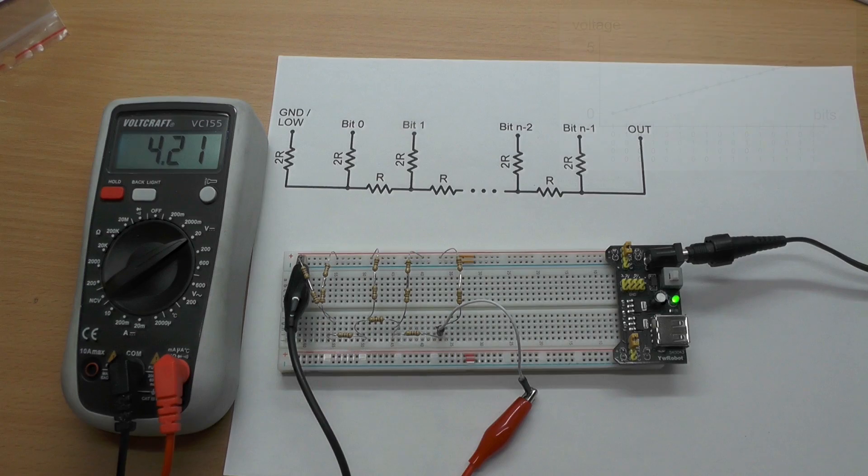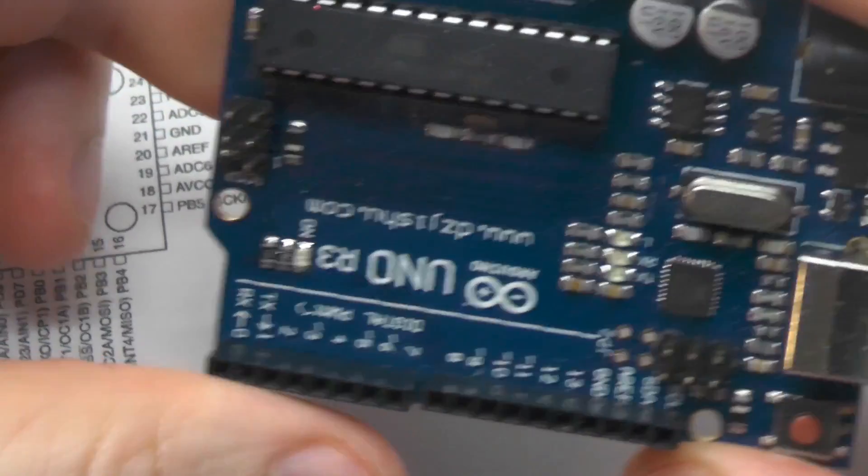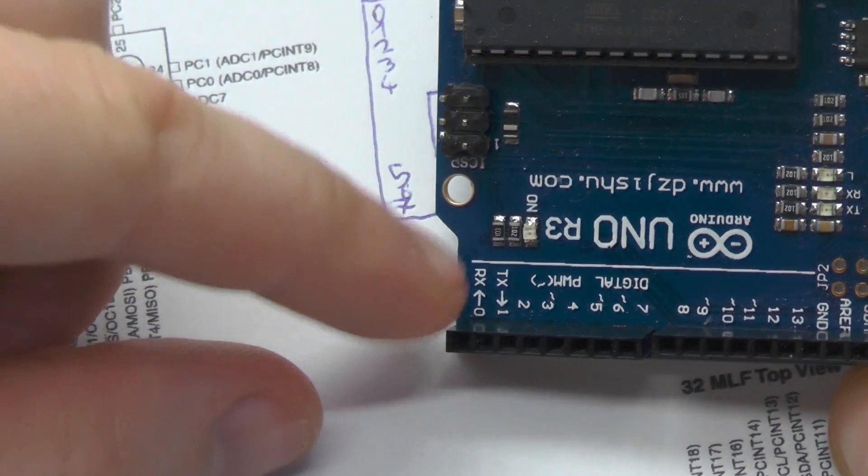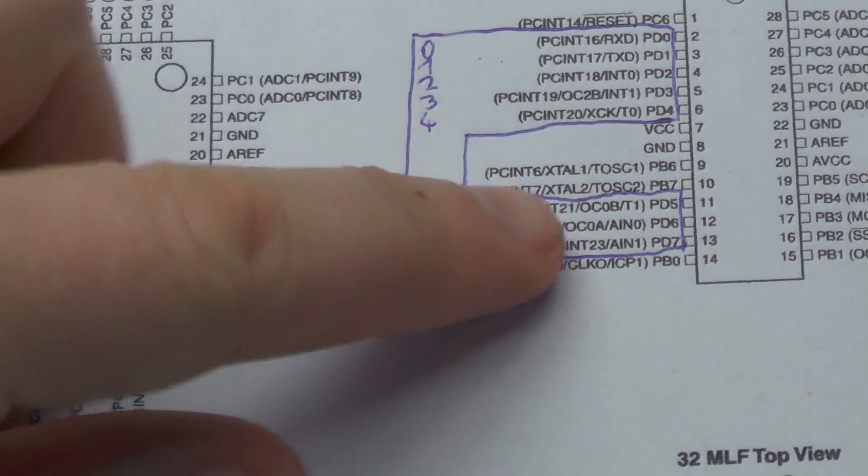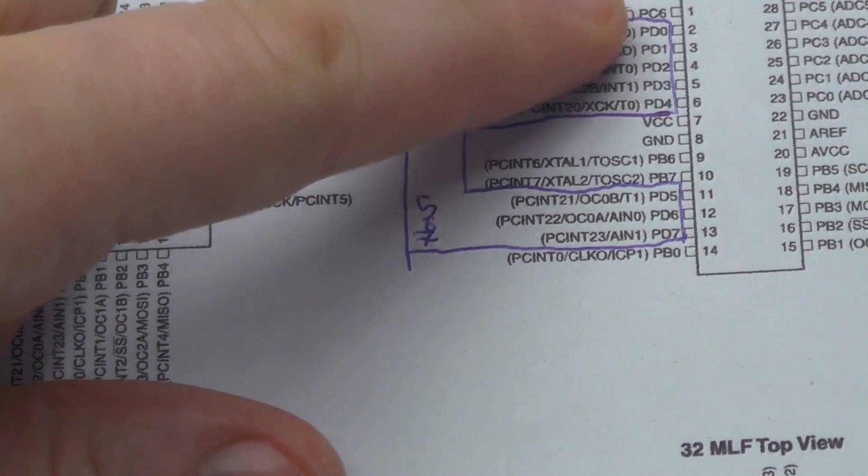So let's just connect an Arduino and try some code. The digital output pins 0 to 7 of the Arduino Uno are nicely mapping to the D port of the ATmega. So let's use this.